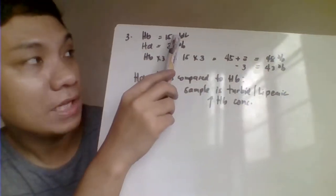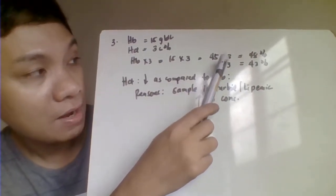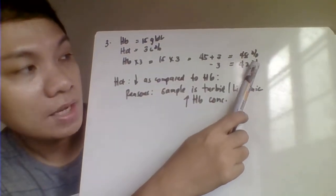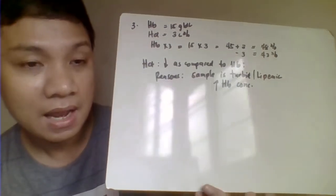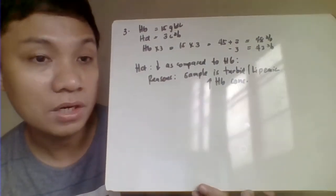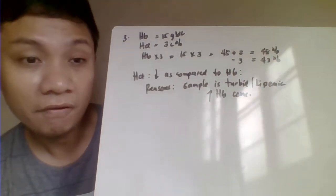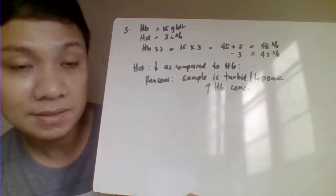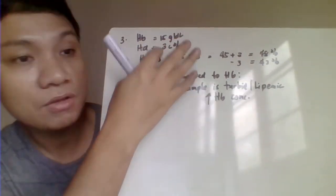Case three: hemoglobin is 15 g/dL, hematocrit is 36%. By the rule of three, 15 × 3 = 45%, so expected hematocrit is 42–48%. But the result is 36% — lower than expected. The hemoglobin is falsely elevated, likely due to a turbid sample interfering with the cyanmethemoglobin spectrophotometric method. Turbidity increases the absorbance reading, artificially raising the hemoglobin value, which explains why it is disproportionately high compared to the hematocrit.